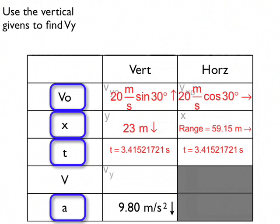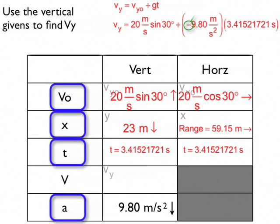To do that, I'm going to use V equals V0 plus AT, or the VOAT formula. Except I'm going to use my subscript, so it's going to be Vy equals Vy0 plus GT. So Vy is equal to 20 meters per second sine 30 plus negative 9.8 meters per second squared times 3.14521721 seconds.